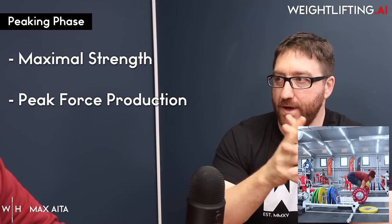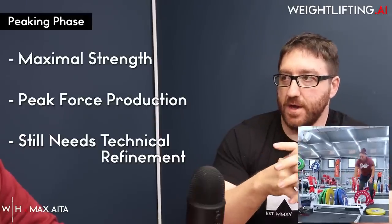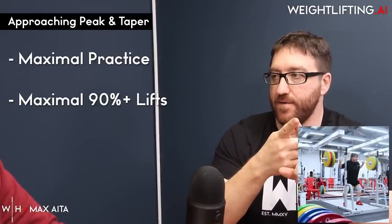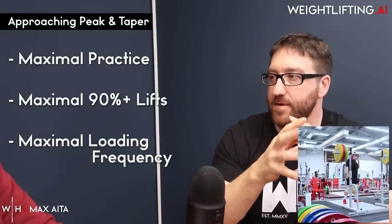Finally, we move into peaking, where we're at the maximum level of strength, producing a lot of force. We need to turn that into technical skill — absolute perfection in the lifts with maximum and near-maximum weights. We have good work capacity for heavy training, but we need to refine the skill with single repetitions and maximum lifts. Throughout peaking, we increase the number of 90%-and-above lifts, and add weight to the bar as often as possible to practice competing with maximum weights.